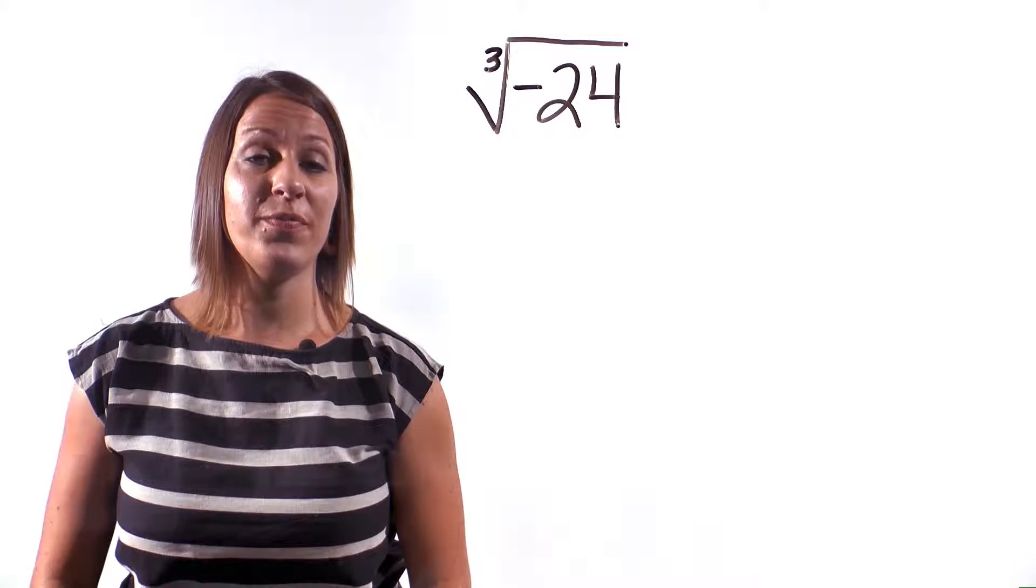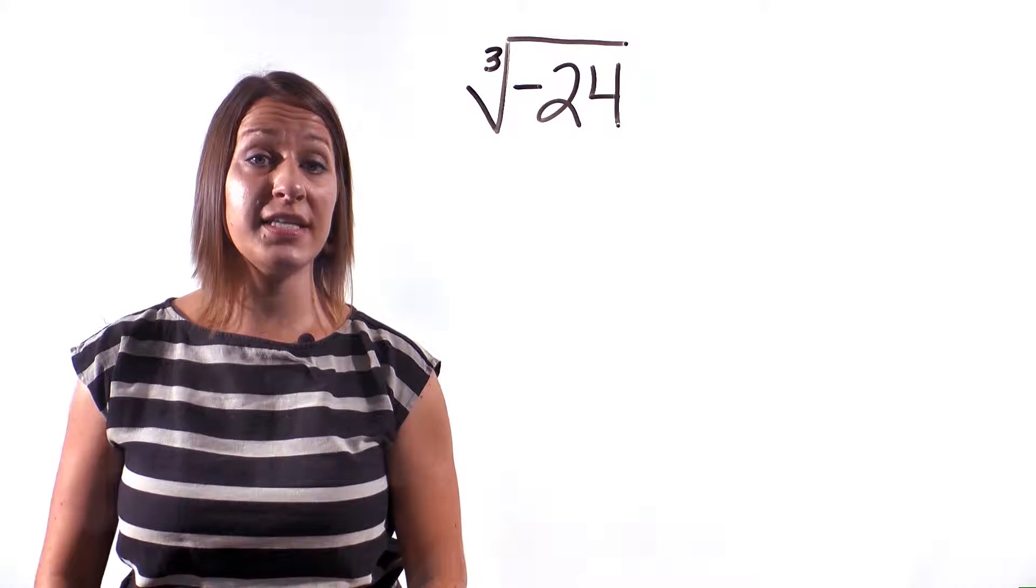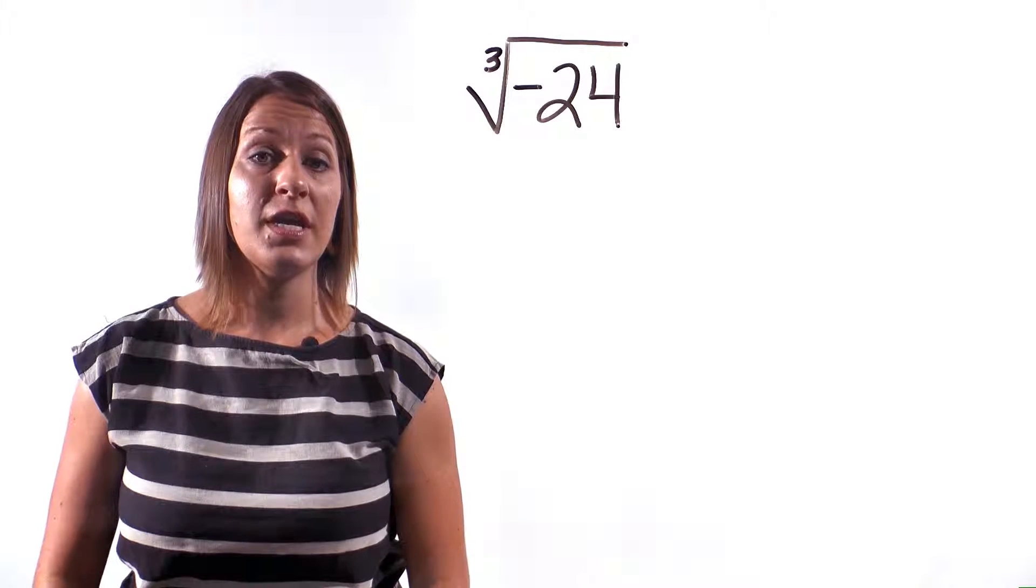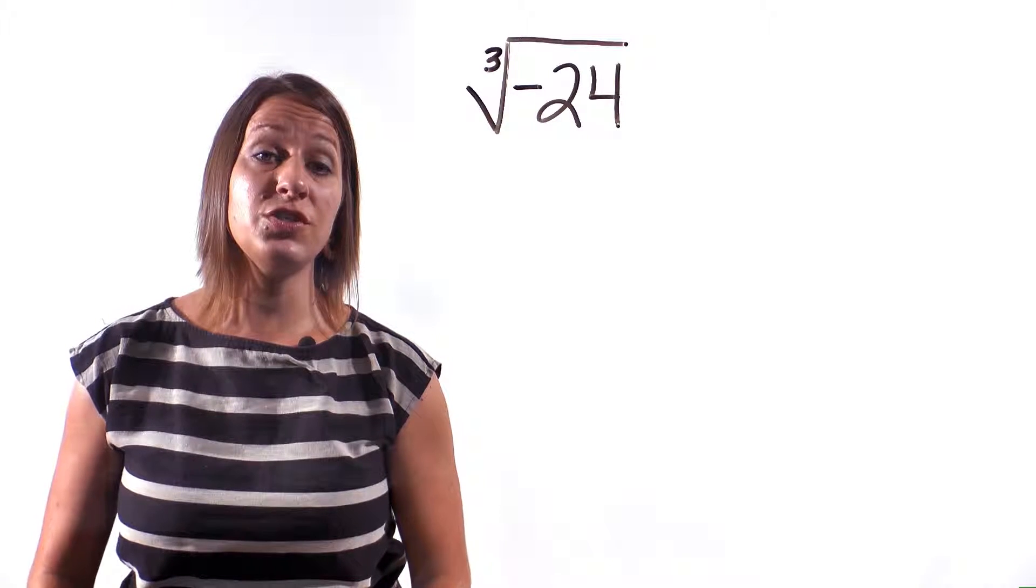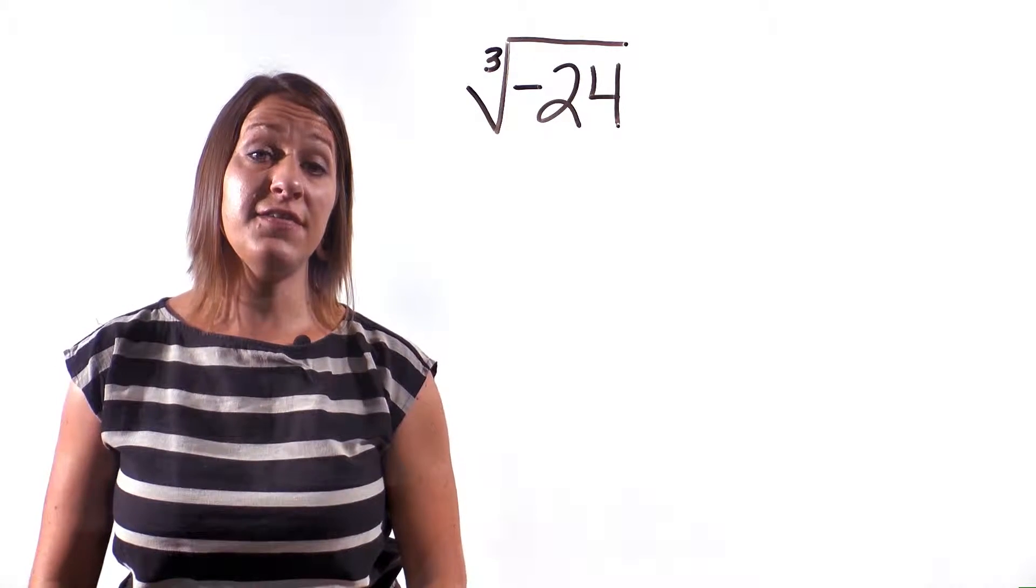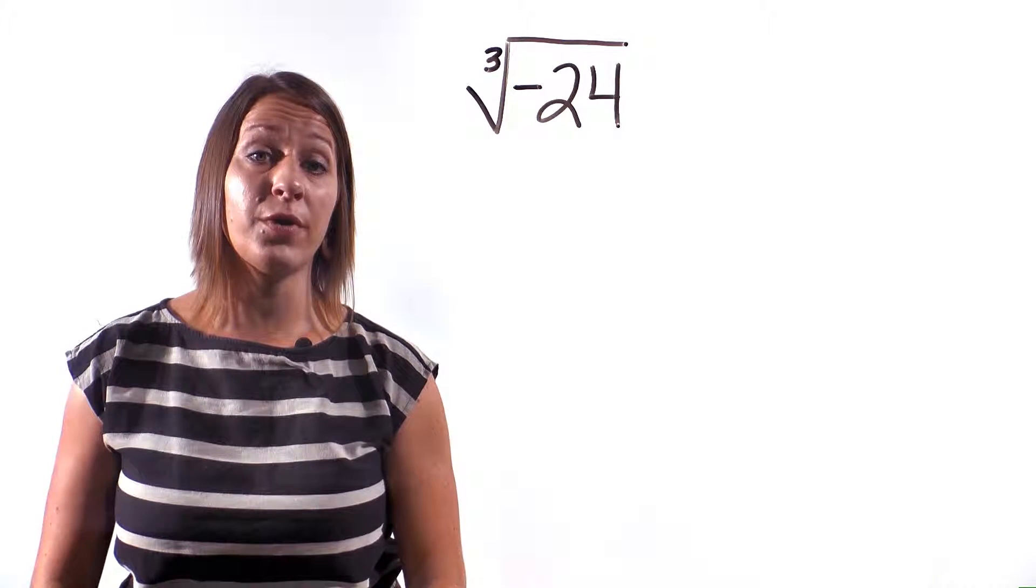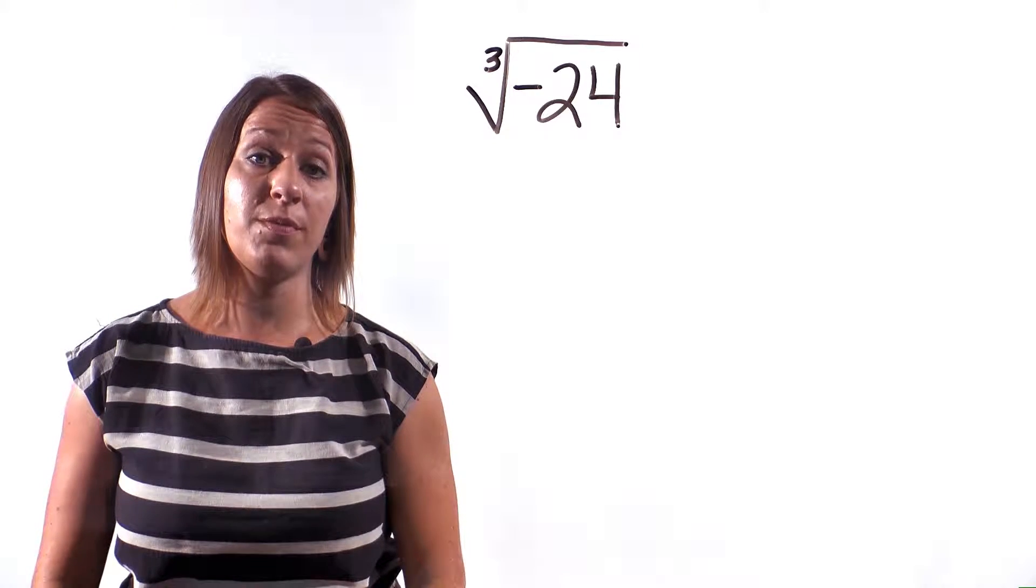Take a look at this first example. We have the cubed root of negative 24. Now usually, if you see a negative sign underneath a radical, it's usually undefined. If the exponent is an odd number, you can actually solve this problem even with a negative sign underneath the radical.